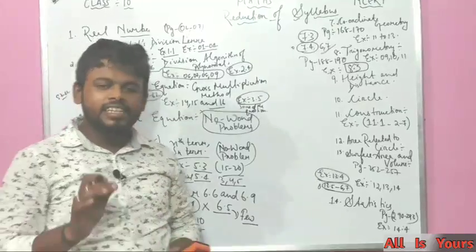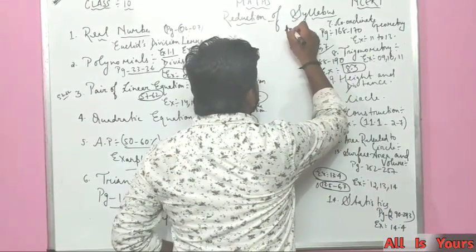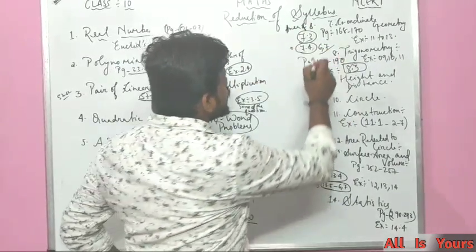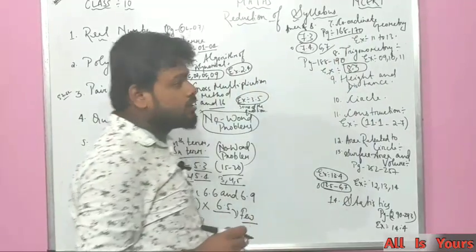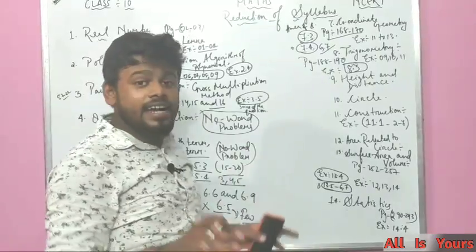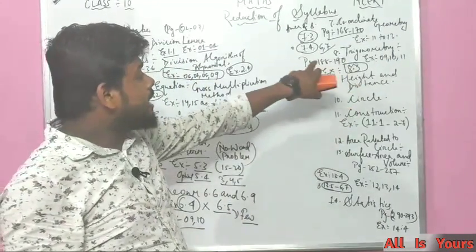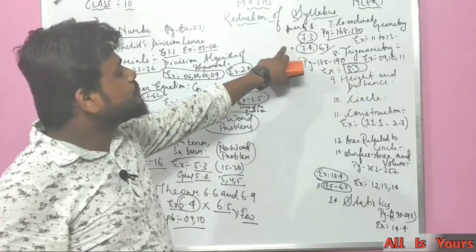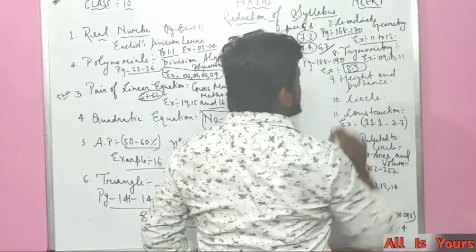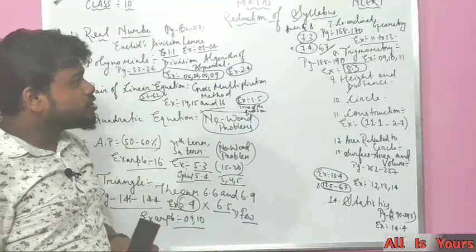Chapter 7, Coordinate Geometry — a very trending topic has been deleted: Area of a Triangle. This comes under page numbers 168 to 170. Exercise 7.3 has been deleted. In optional Exercise 7.4, questions 6 and 7 along with Examples 11 to 13 have also been deleted.